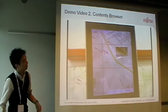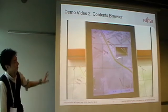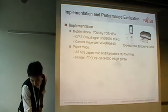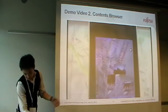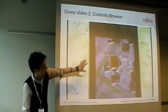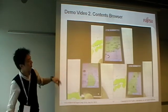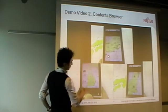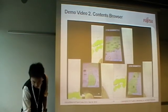We have developed two applications using these technologies. This video shows the content browser, where photos and text information are overlaid on the paper maps and tracked using latitude and longitude coordinates. This is an example of using the application for learning geography for children, where the name of the city and specialty foods such as fish and fruits are overlaid on the screen.